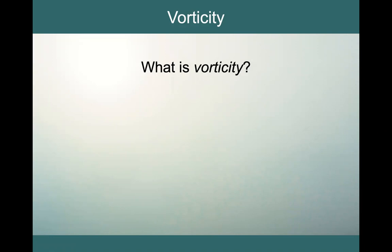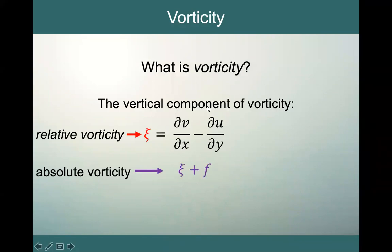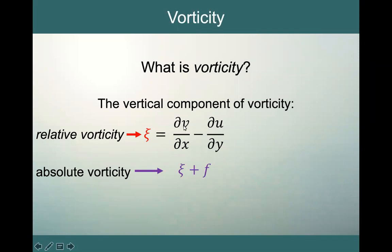What we're interested in is the vertical component of its vorticity. We've seen that we can break that down into two pieces. The first is the relative vorticity, the squiggly zeta. That is going to be equal to the shear of the v component of our velocity minus the shear of the u component of our velocity — so that's dv/dx minus du/dy. If we have some shear, that will give us a relative vorticity.